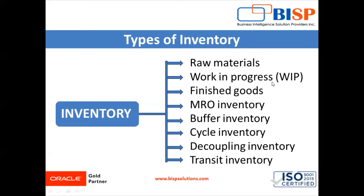Second is work in progress inventory. When raw materials have been sent for processing but have not yet been approved as finished goods, this stage is known as work in progress. In a cookie manufacturing company, after the raw materials have been processed and the cookies have been molded, they go for a quality check. All cookies waiting for their quality check are considered work in progress — items that have been processed but are not yet ready for sale.